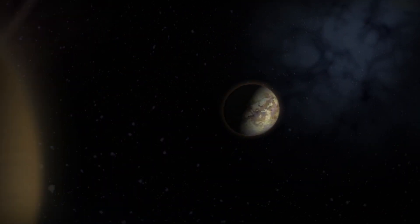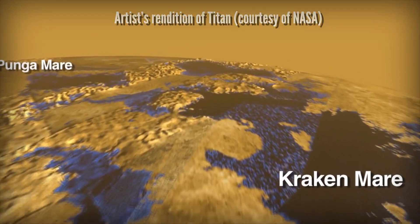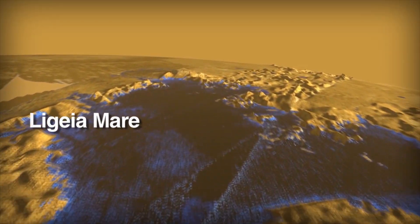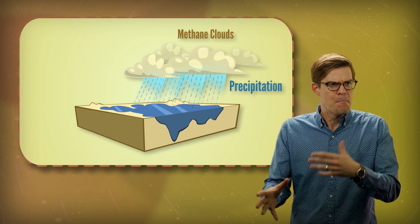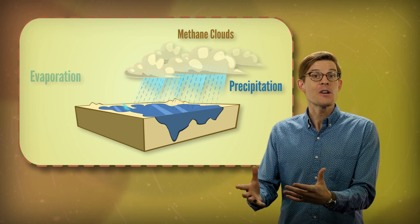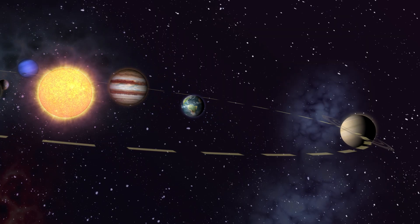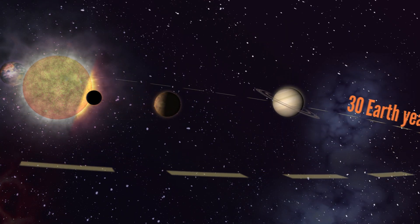Saturn's moon Titan is the only moon in our solar system with an atmosphere, and the only known body besides Earth with a liquid surface, although the lakes are filled with methane rather than water. Titan's seasons drive a hydrological or methanological cycle, where spring rains grow the lakes and evaporation shrinks them. But seasons in the Saturn system don't happen very frequently, since its orbit takes 30 years.